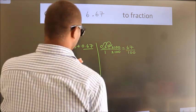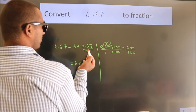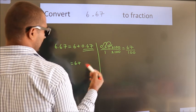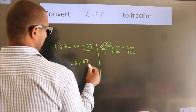Now here, 6 plus in place of 0.67, now we write this fraction 67 by 100.